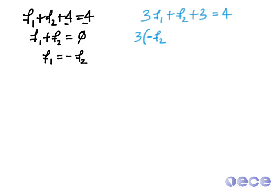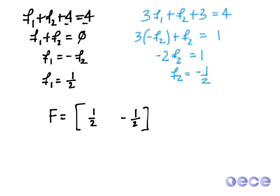3 times minus f2 plus f2 is equal to 1. Or minus 2 times f2 is equal to 1. Or f2 is equal to minus 1 half. Therefore, f1 is equal to minus minus 1 half or plus 1 half. So my final controller F is equal to 1 half minus 1 half. And this is the solution for part 2.